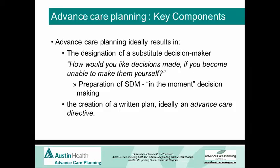When we think about advanced care planning, the key components are when we're talking to a person — a patient, a consumer, or whoever — we're trying to encourage them to think about the designation of a substitute decision maker. As a healthcare professional, the problem we have is if we can't talk to the person, we need to make decisions. So the question we put to the person doing advanced care planning is: how would you like decisions to be made if you became unable to make them yourself? That could include writing wishes down in detail, or appointing a trusted person to make decisions based on whatever's happening at the time.